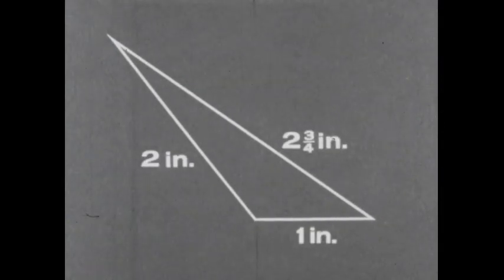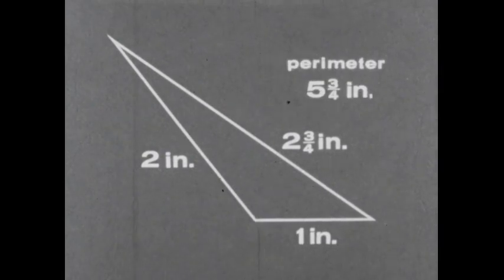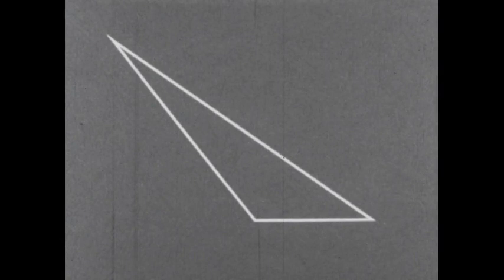The perimeter of any triangle is the sum of the lengths of the sides of the triangle. Triangles are identified not only by their sides, but also by their angles.